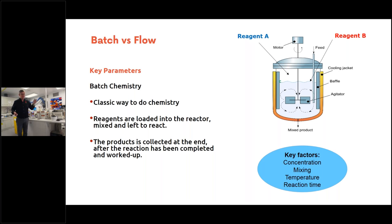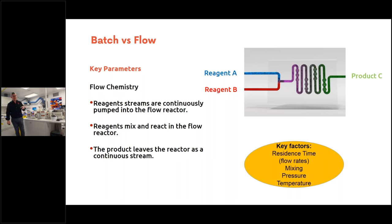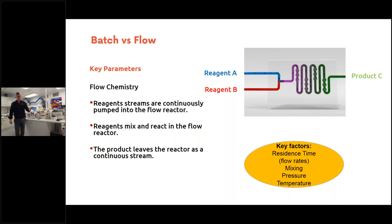In a flow reactor we're doing something slightly differently but still carrying out the same chemistry — pumping reagents continuously into a flow reactor, mixing, reacting, and eluting. We still need to work up and isolate, and still think about temperature, reaction times, mixing, and stoichiometric ratios. One additional parameter that appears in flow — analogous to reaction time but called residence time — and importantly, pressure, which is a key advantage of flow chemistry.